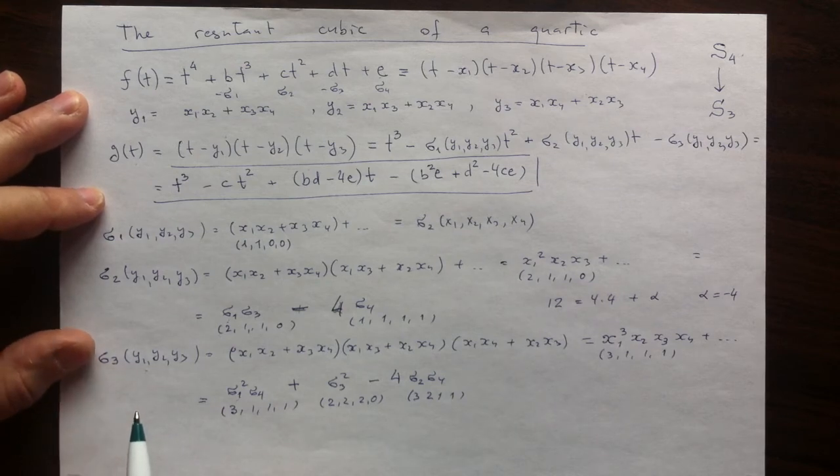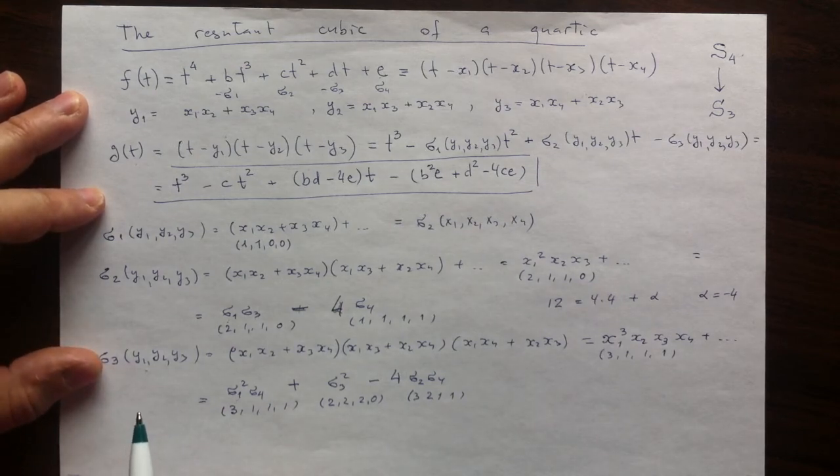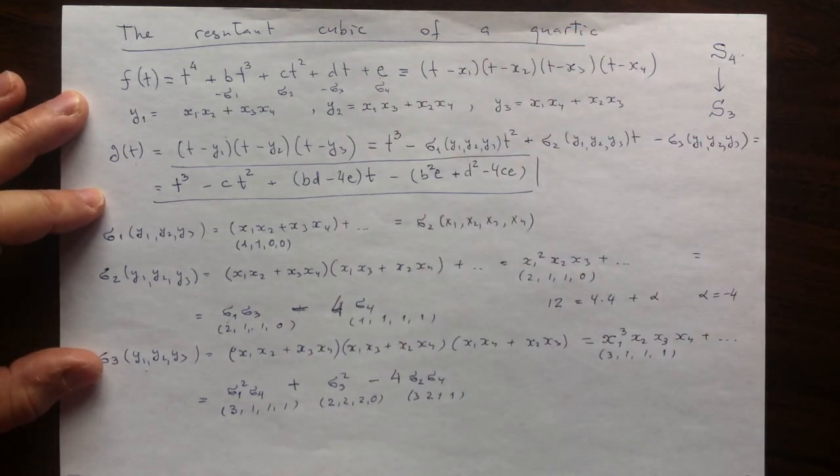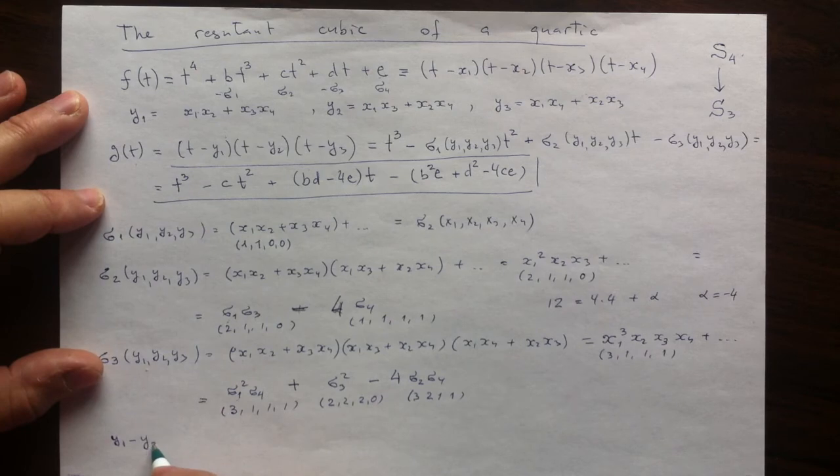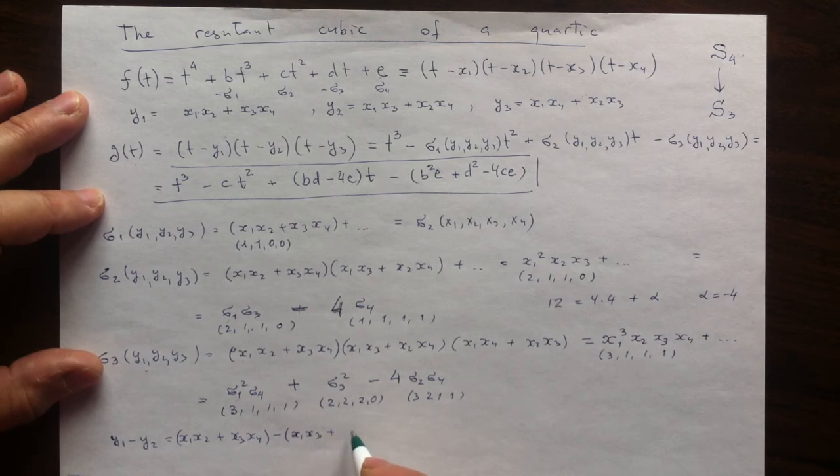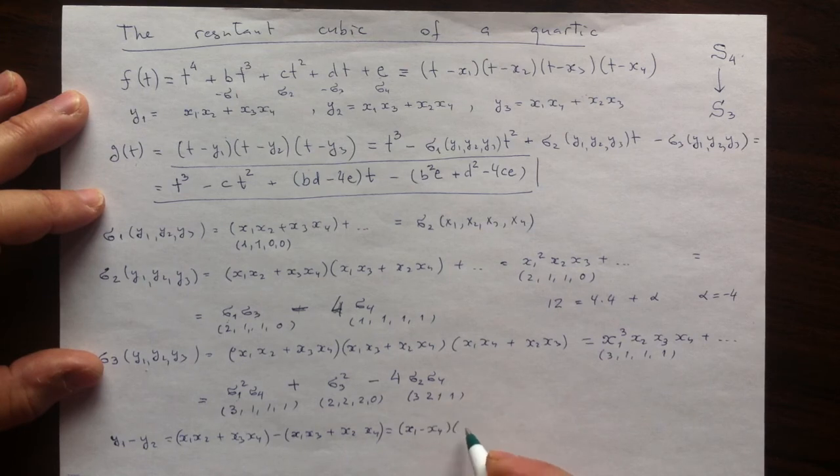Just to finish with one more property, nice property of this cubic with respect to the original quartic. Let's look at the differences of the roots of the cubic. So y1 minus y2 is x1 x2 plus x3 x4, minus x1 x3, plus x2 x4. That is nothing but x1 minus x4, product of x2 minus x3. It's easier to go from right to left.